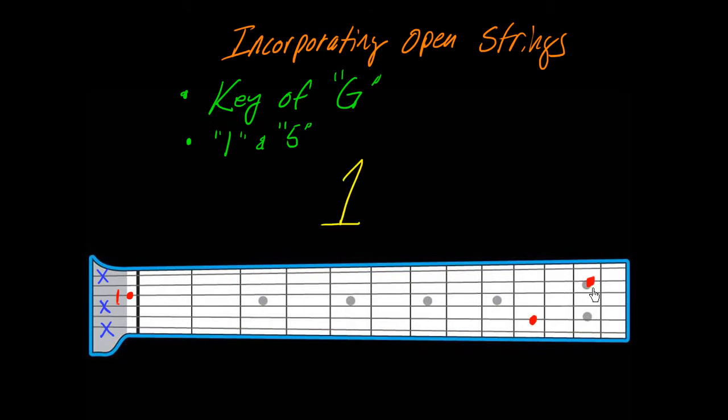So here's a one chord, same fretting, but only one of the strings is open. Seven is going to look like that. Six is going to look like that. So the chords look exactly the same. Five looks like that. Four looks like that. Three, two, and back to one.